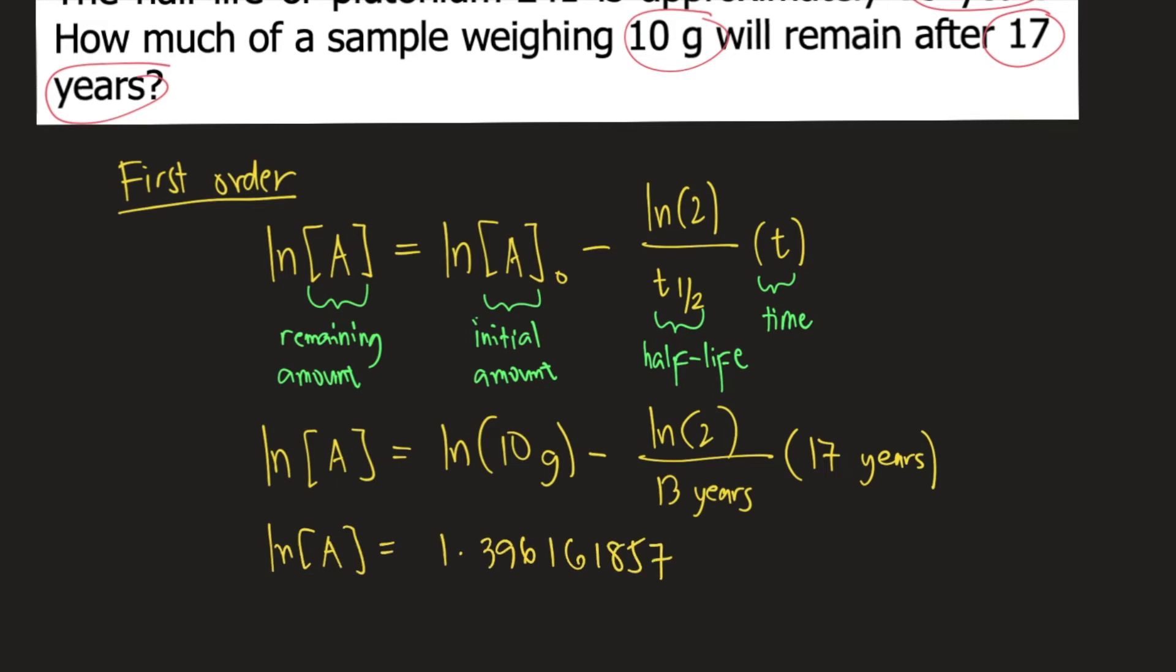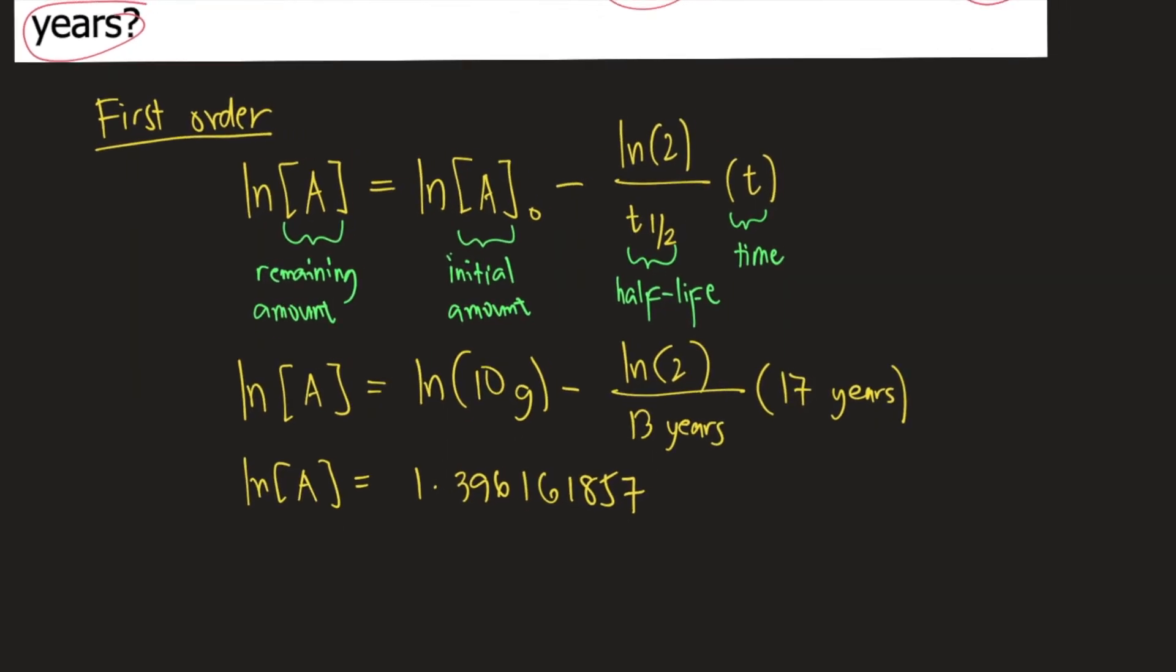Take note that the problem is asking us for the remaining amount, A. So we need to find a way to remove the ln on the left side. You need to do e, that's Euler's number, raised to whatever is on the right side.